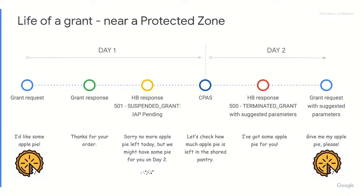Using this pie analogy, what this essentially means is that the SASS has no more apple pie left for today, but the SASS might have some apple pie for you tomorrow. As we talked about before, during CPAS the SASS will check to see if there's any apple pie left for you in the shared country. If there is, then after CPAS the SASS will return in the heartbeat response a message indicating that you should re-request your grants with the suggested parameters.